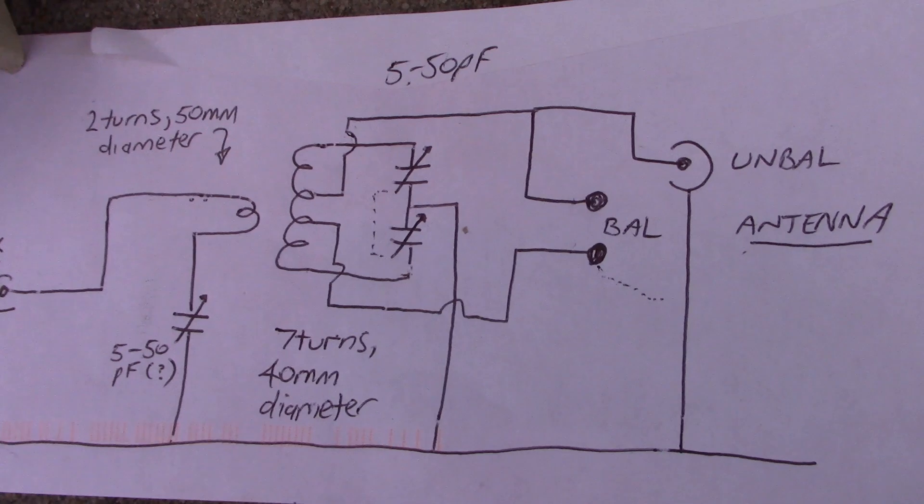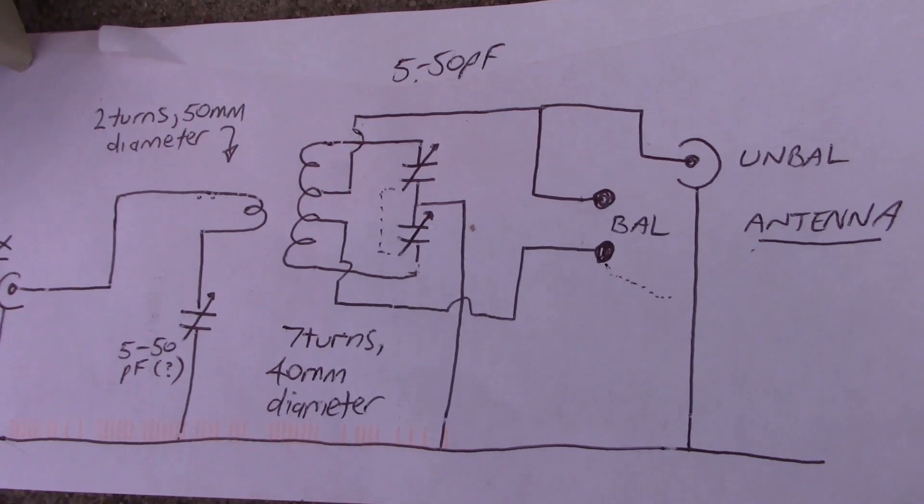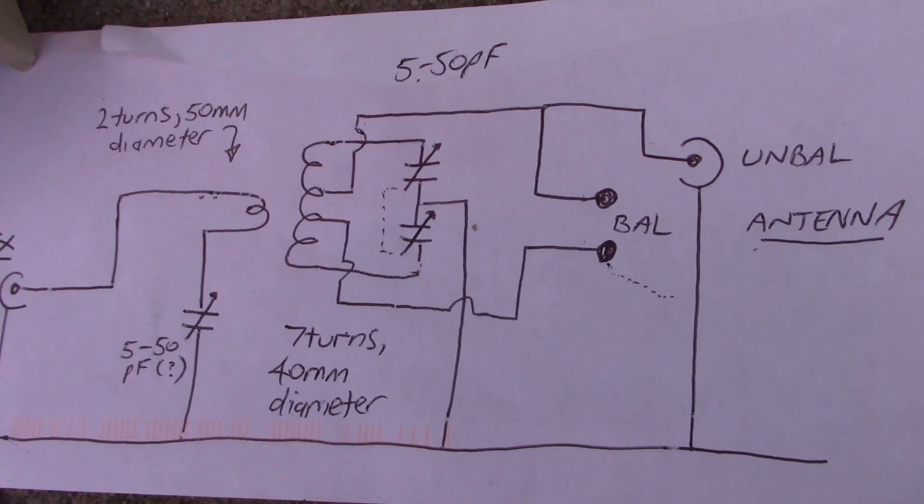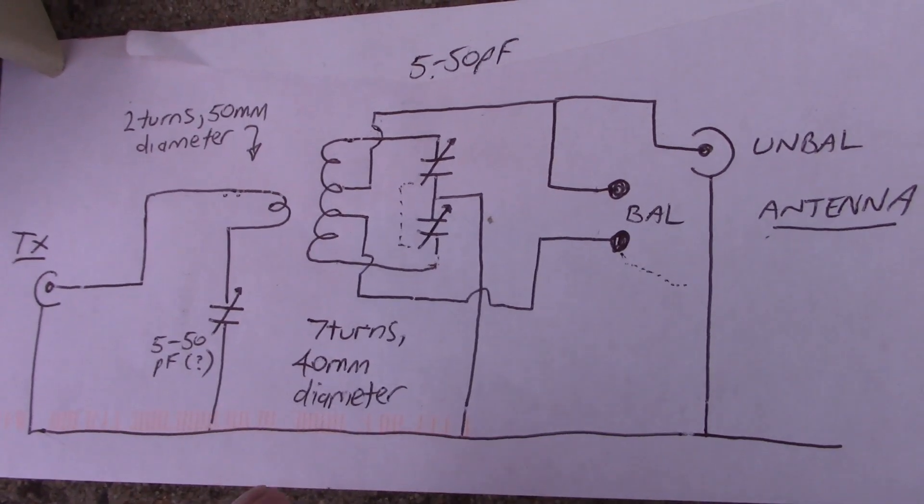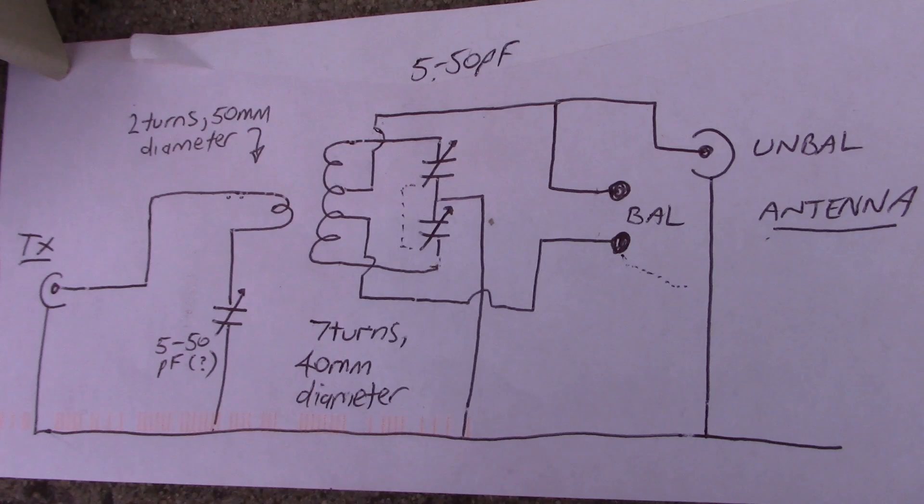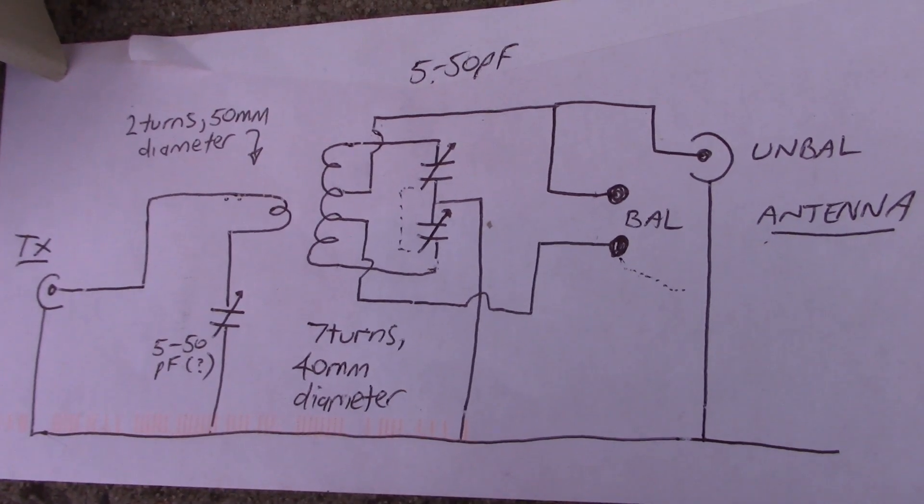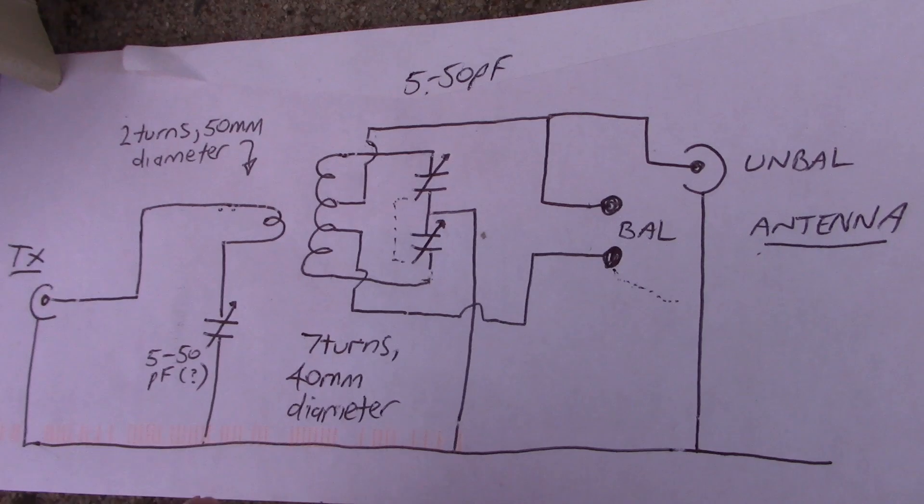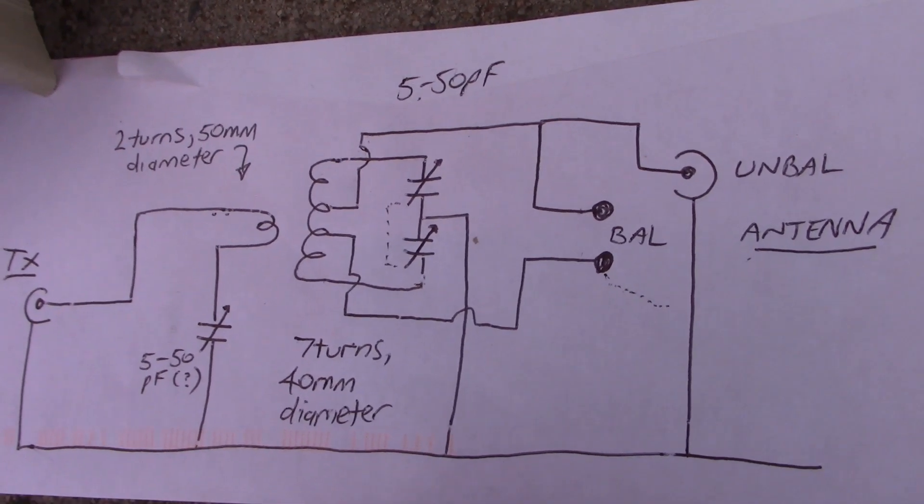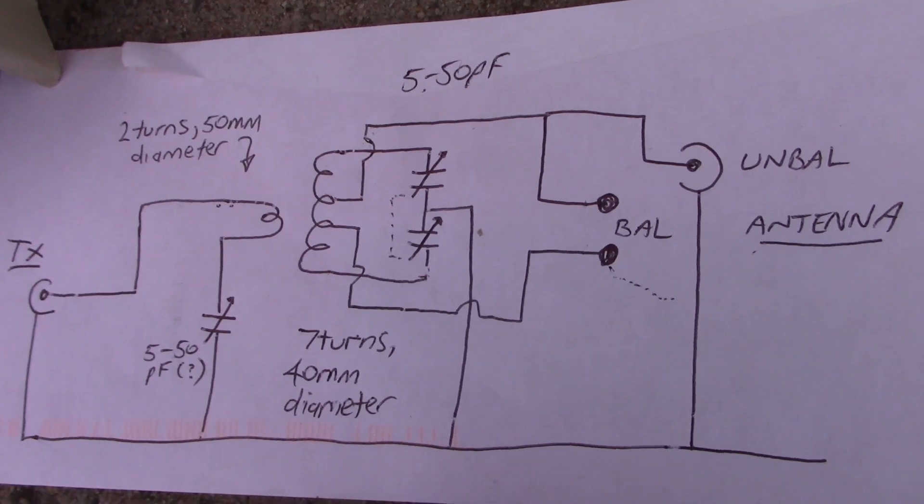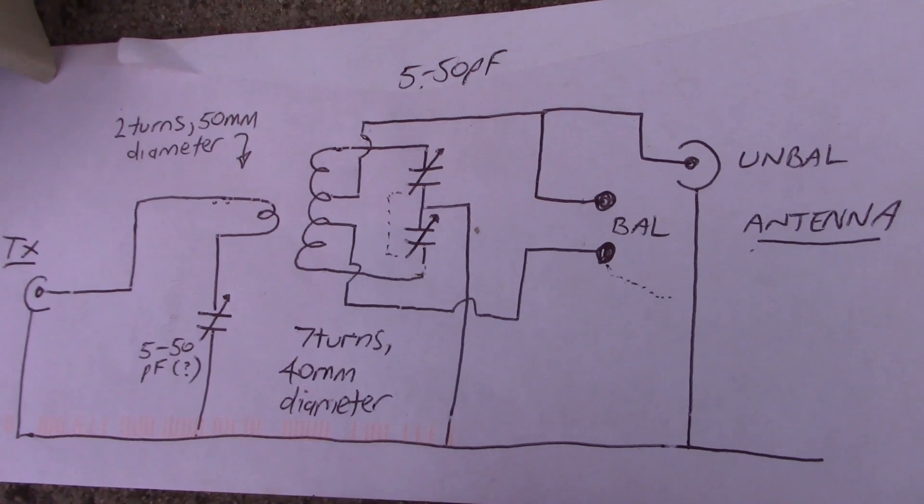What I didn't do then but I have done now is to try and reverse engineer this antenna coupler, just in case you want to build one. As you saw before, it works very well and we're at a good phase of the solar cycle where it's handy to have an antenna coupler for six meters.